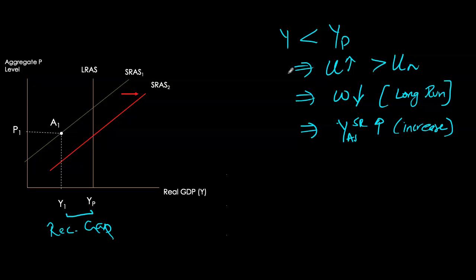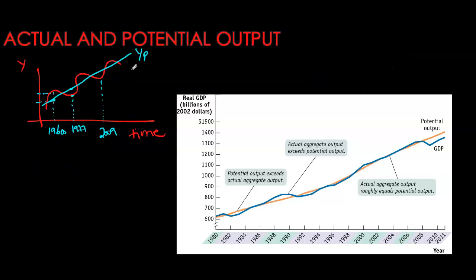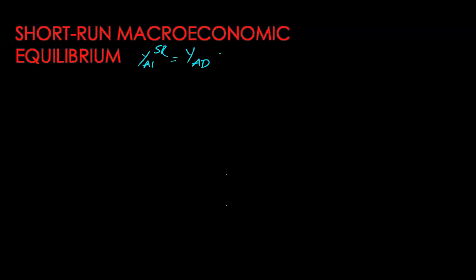The understanding of this response of the short-run aggregate supply curve in the face of output gaps is very important in order to understand how the economy always eventually moves towards its potential. Recall that we also saw this in our business cycle diagram. Now that we understand the components of the model independently, let's put them together to understand business cycle fluctuations. Short-run equilibrium in the ADAS model is simply when your aggregate output supplied in the short-run is exactly equal to the aggregate output demanded by firms. The price level corresponding to this equilibrium situation is called your equilibrium price level.